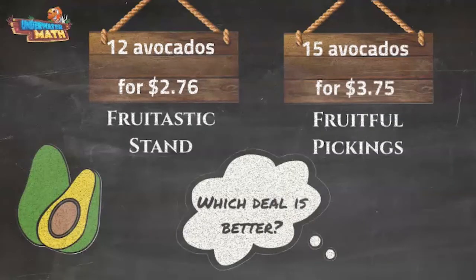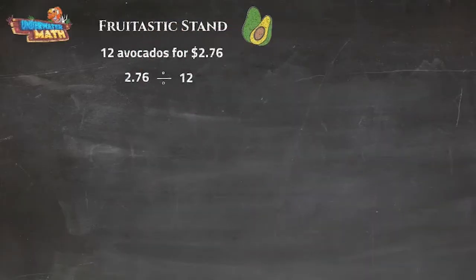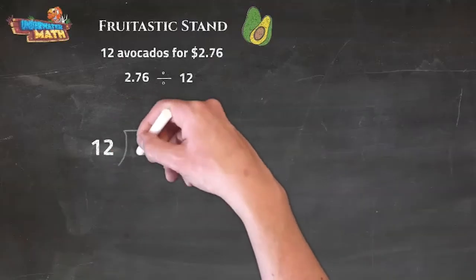We can use decimal division to solve this problem. Let's look at Fruitastic Stand first. The most important part is bringing that decimal point up from the dividend.